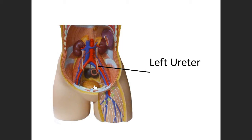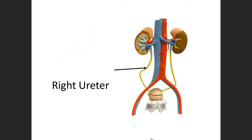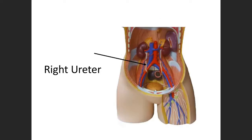This is on page two in the atlas. Some of the slides are in the front of the book, some are in the back. Here you can see the right ureter, draining the right kidney down into the urinary bladder. And then here's the right kidney, and the ureter is exiting from the kidney and heading down into the urinary bladder.